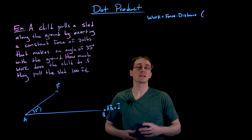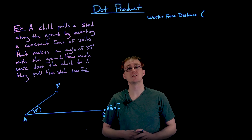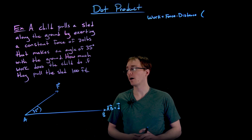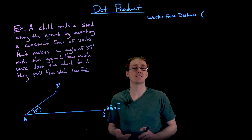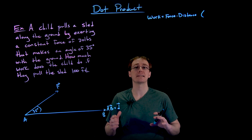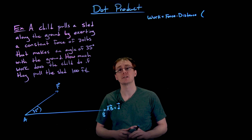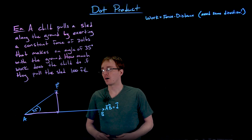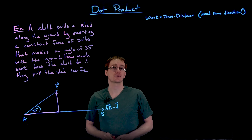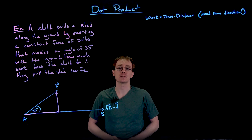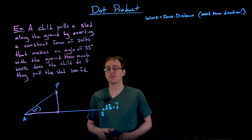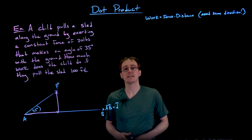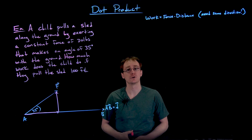In physics, work is only equal to the product of force and distance when our force is in the exact same or parallel direction to that distance traveled or displacement that occurs. So if we're in a situation like we have here — where our force vector is not in the same direction as the displacement or the motion — then we have to figure out how much of that force vector is in the direction parallel to our motion.